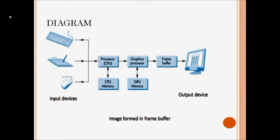I also need a frame buffer. The frame buffer stores data in the form of pixels, and that pixel data is going to be displayed on the output device. These are the components needed to construct a graphics system. Now I am going to explain the process briefly, and later explain the components in detail.